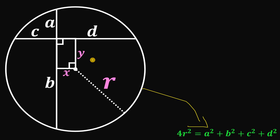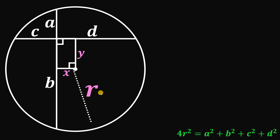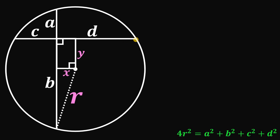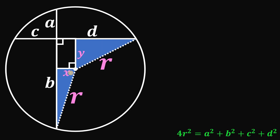Now we will use some right triangles. If we put the radius like this, we can draw a right triangle. And also, we can drop the radius right over here and draw another right triangle. So now we have two right triangles, and these will help us to show this relationship.